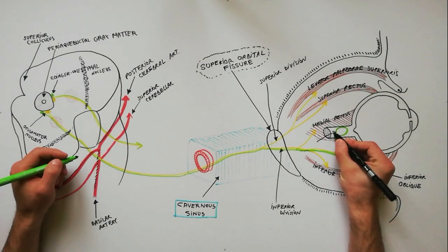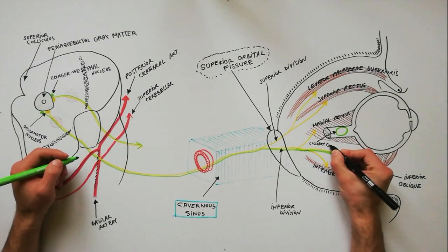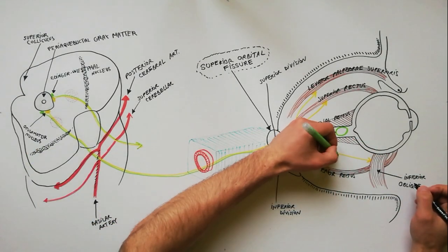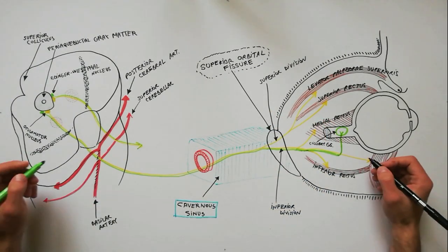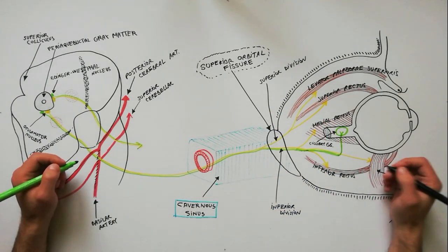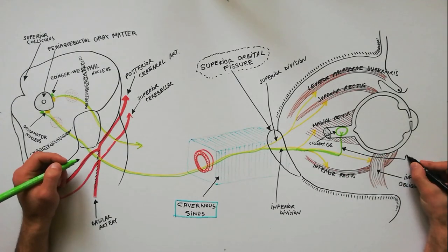The fibers arrive at the ciliary ganglion via a communicant of the branch to the inferior oblique with the ganglion. This communicant is called the parasympathetic root of the ciliary ganglion.